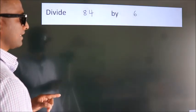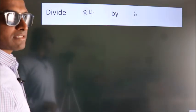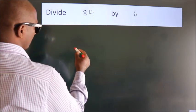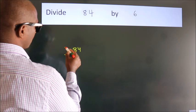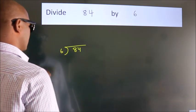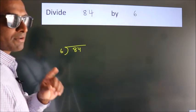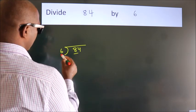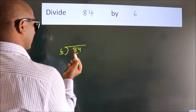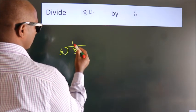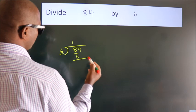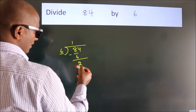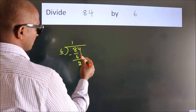To divide 84 by 6, we frame it in this way: 84 here, 6 here. This is step 1. Next, we have 8 here. A number close to 8 in the 6 times table is 6 — 6 once is 6. Now we subtract and we get 2. After this, bring down the beside number.